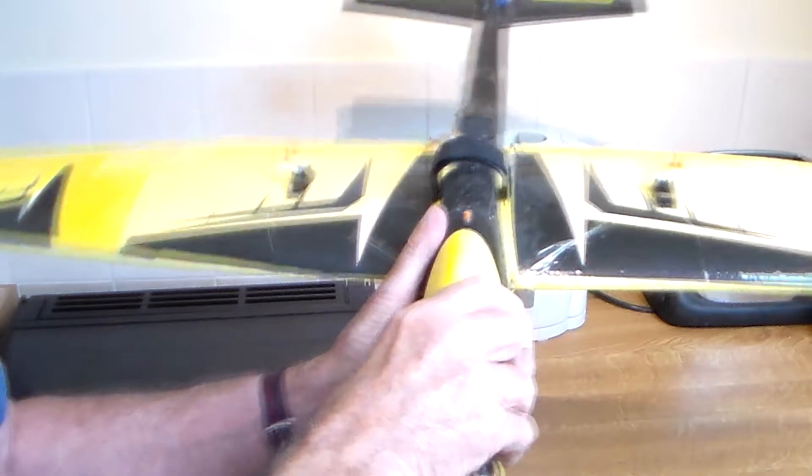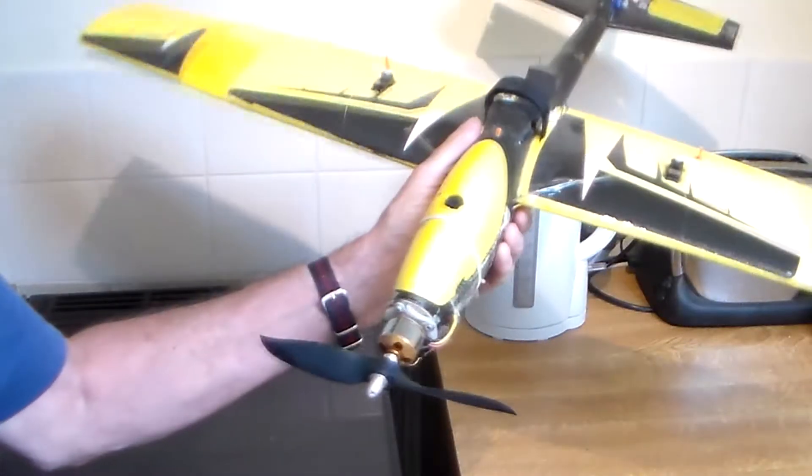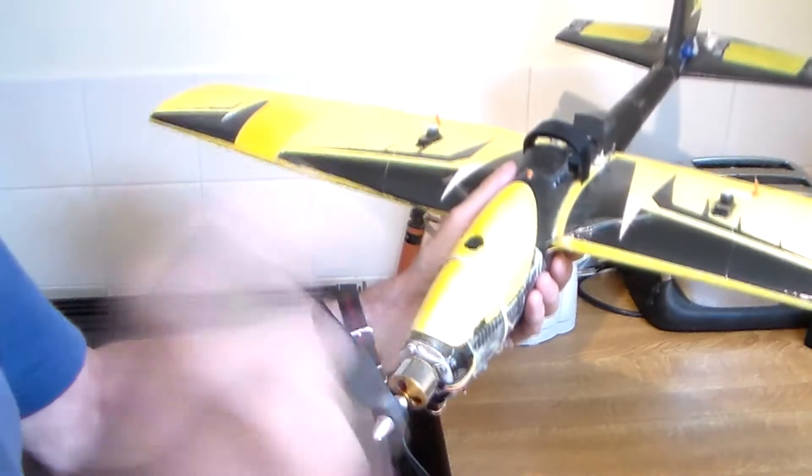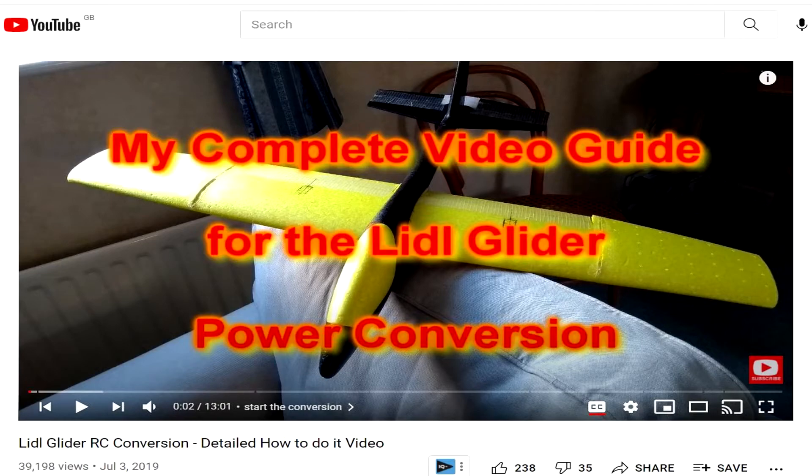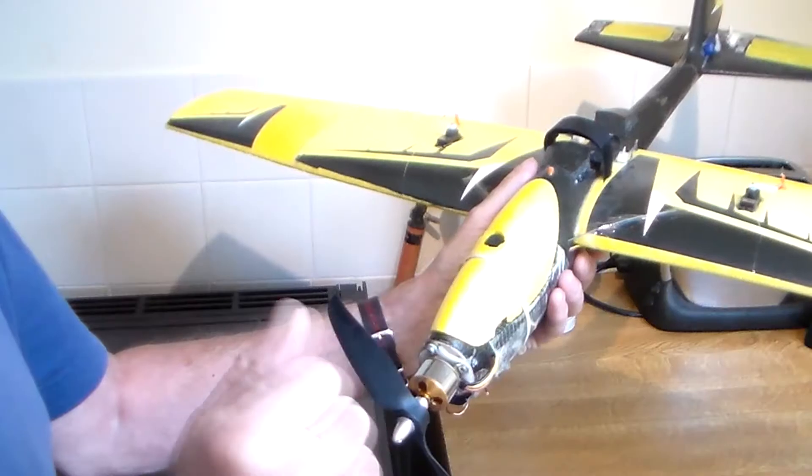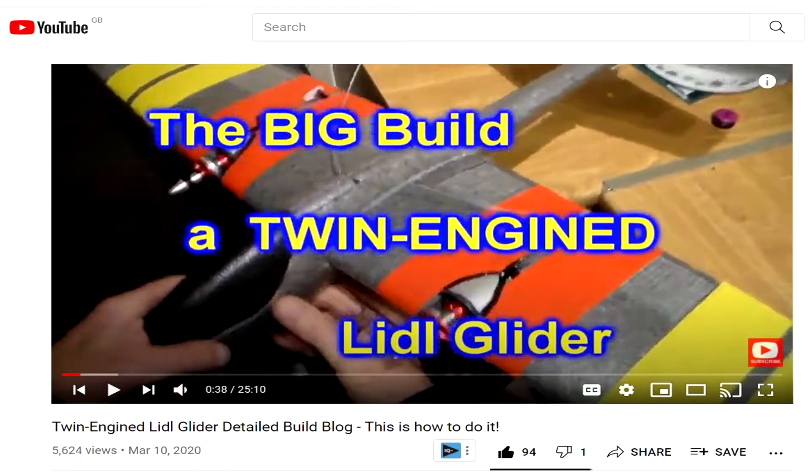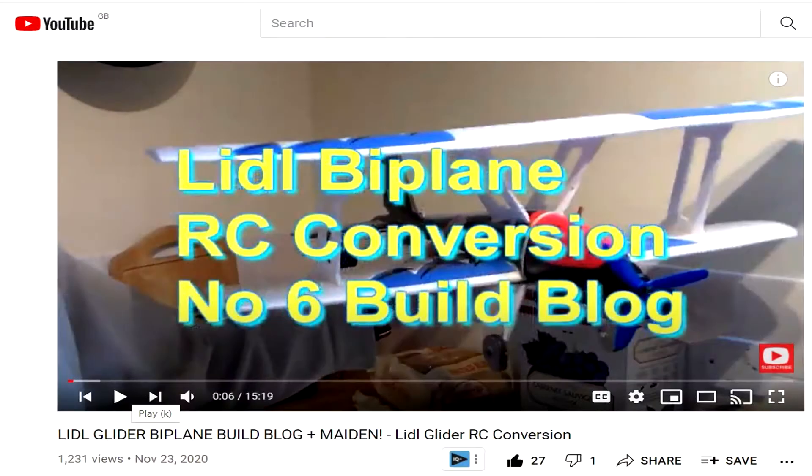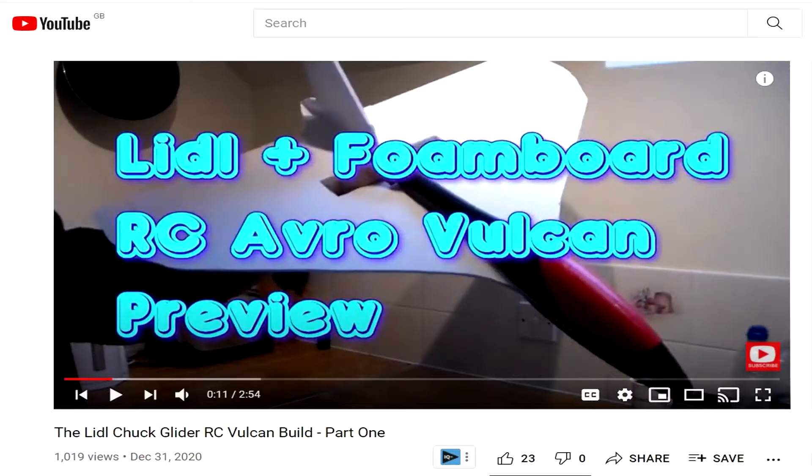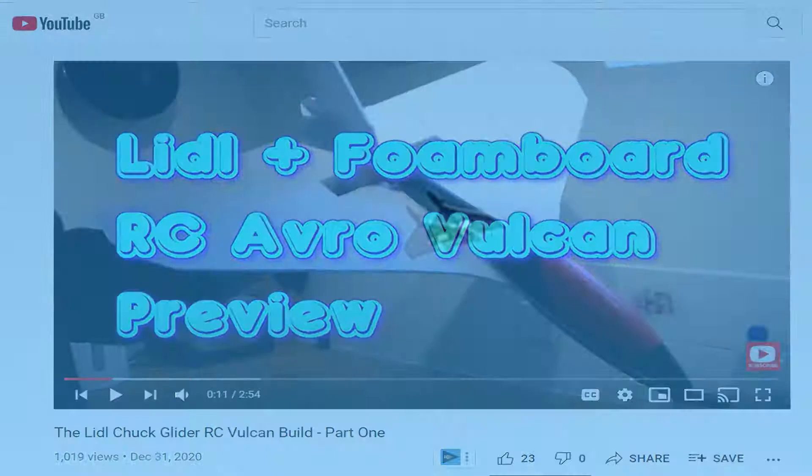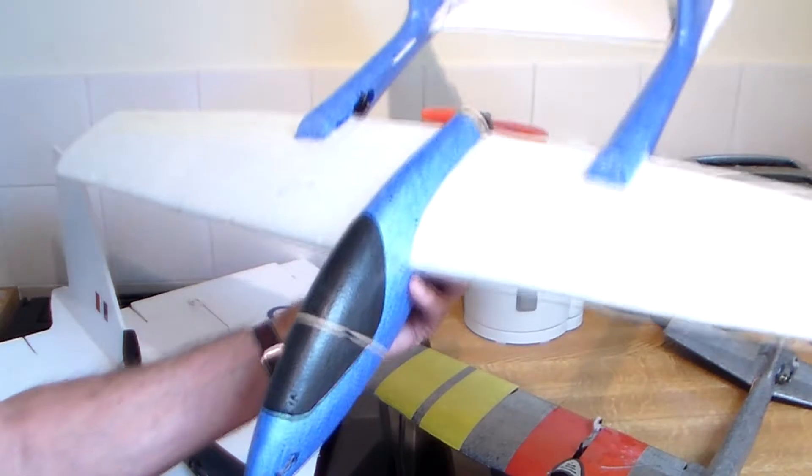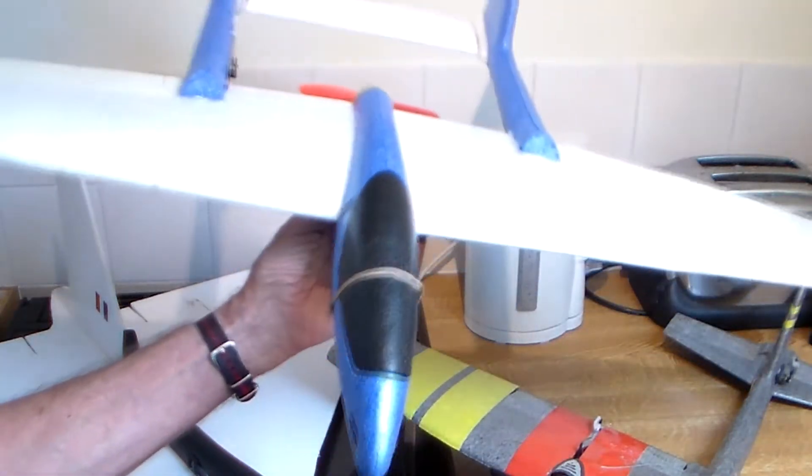Before taking a good look at the EDF version let's take a quick look at the previous conversions. This was number one, a single brushless motor at the front end. I made a complete build blog which has now had 40,000 views. Then there was the twin engine version which flew beautifully. You've seen my biplane. You've seen my Lidl Vulcan which also flies beautifully, almost hands off. And there was the twin boom version which didn't fly very well. So what was missing?